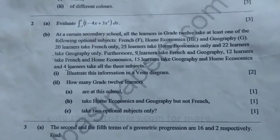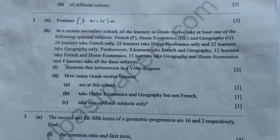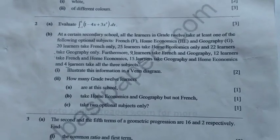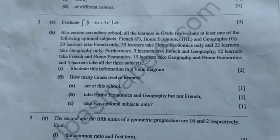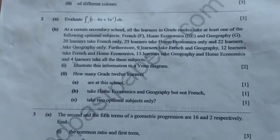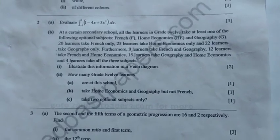This question was very simple. Question 1 asks you to illustrate this information in a Venn diagram — it's carrying two marks. Question 2 asks: how many grade 12 learners are at this school? B, take home economics and geography but not French. C, take two optional subjects — one mark each. We are going to see how best we can answer this question.